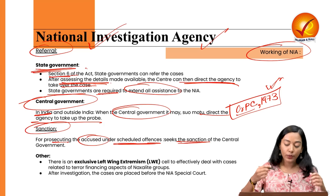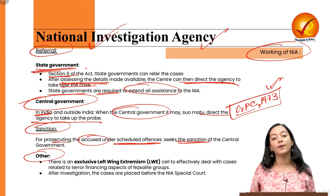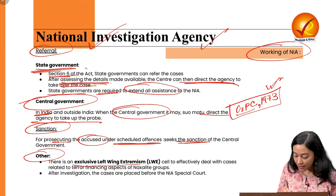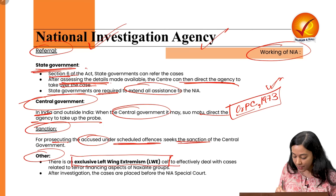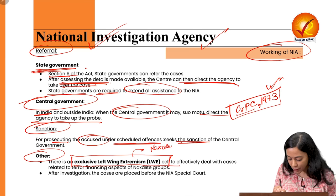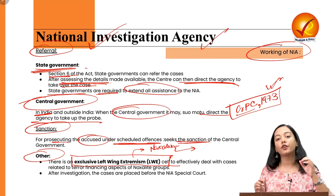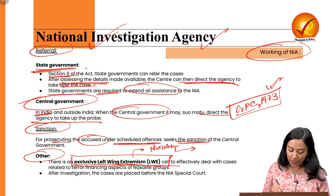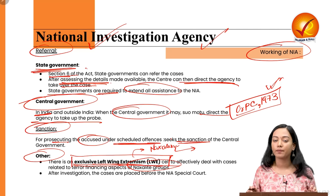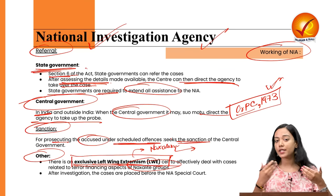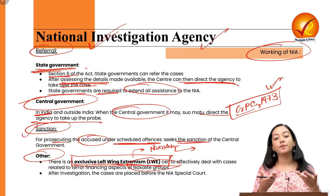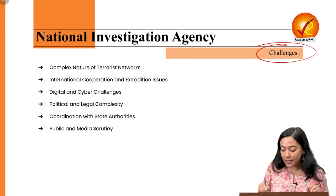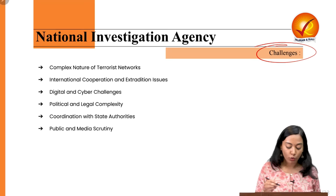NIA also has an exclusive Left Wing Extremism cell to deal with Naxalism — which originated in the Naxalbari district of West Bengal — handling cases related to Naxalite groups and their terror financing. Key challenges for NIA include: the complex nature of terrorist networks operating across borders such as Jaish-e-Mohammed and Lashkar-e-Taiba; difficulties in tracking transnational operations; and issues of international cooperation and extradition.